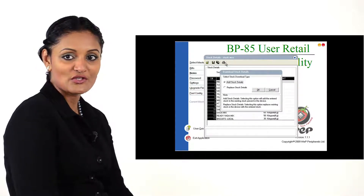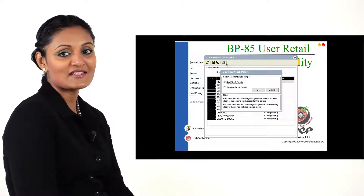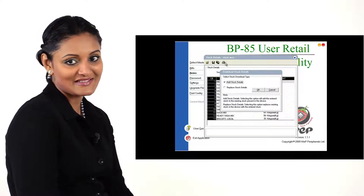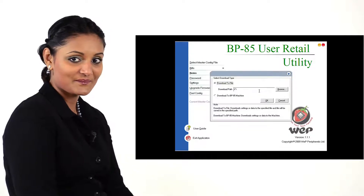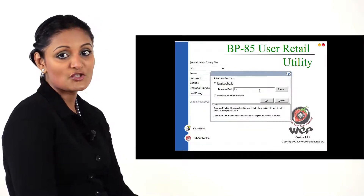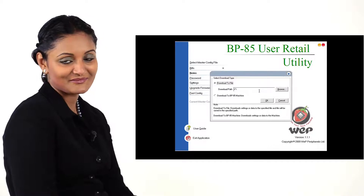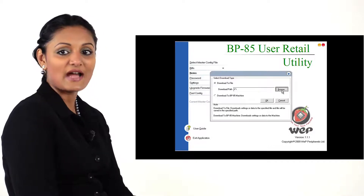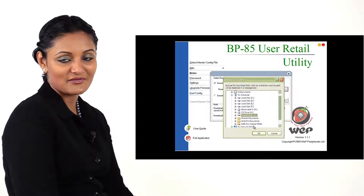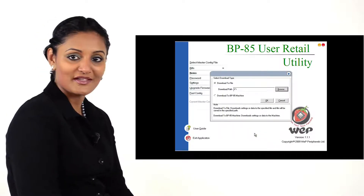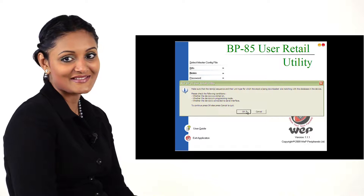In the download stock details panel, choose Add Stock Details. Click OK. In the next panel, choose Download to File. Click Browse and point to the USB drive. Click OK.